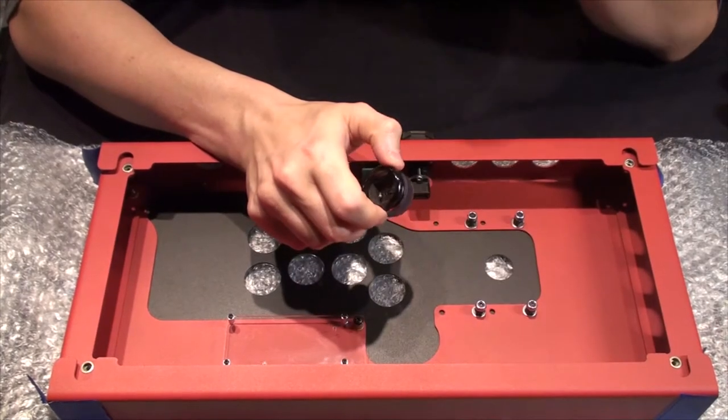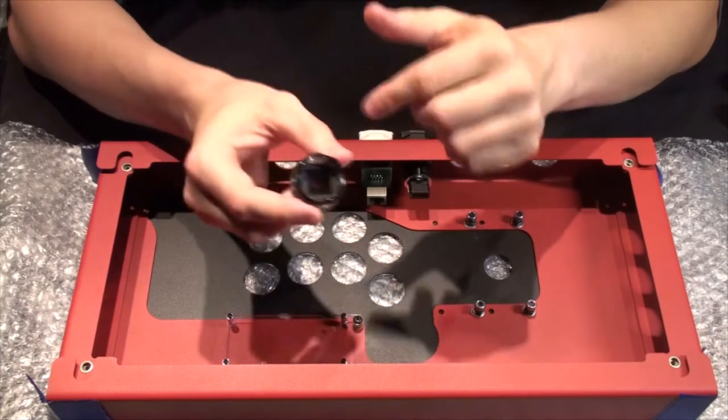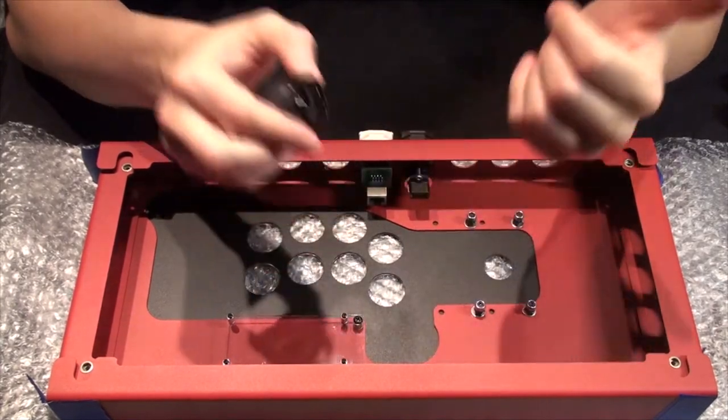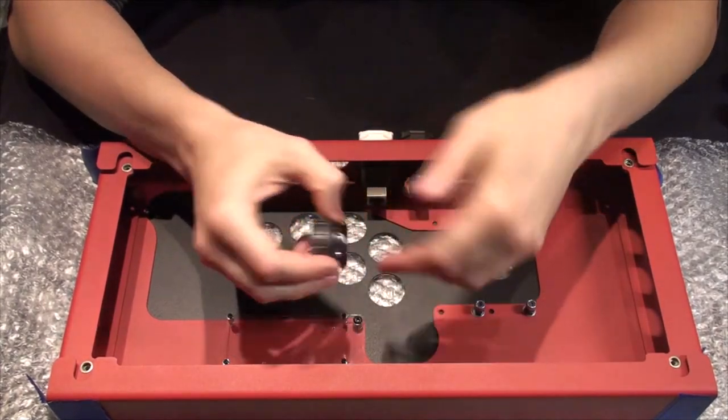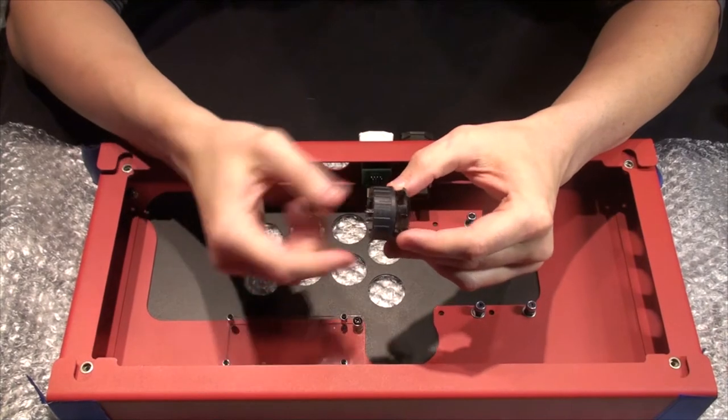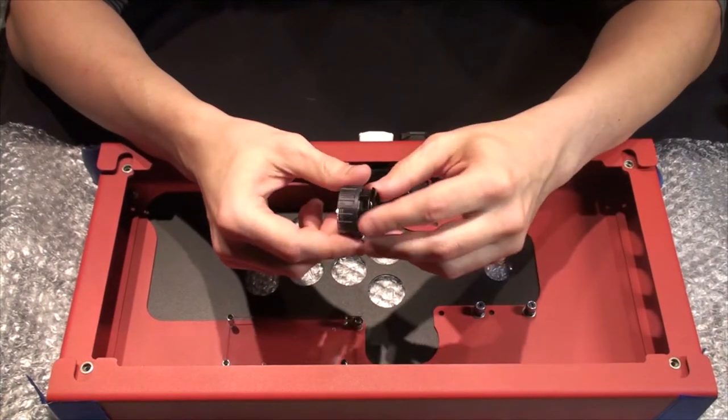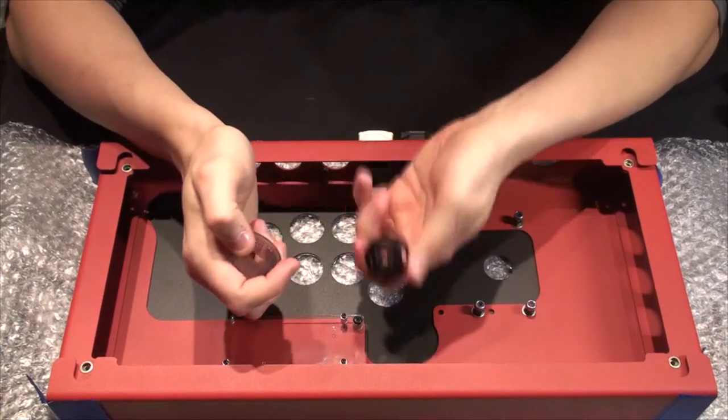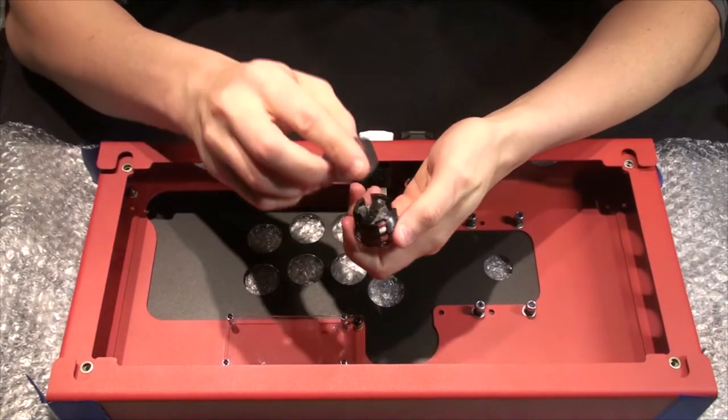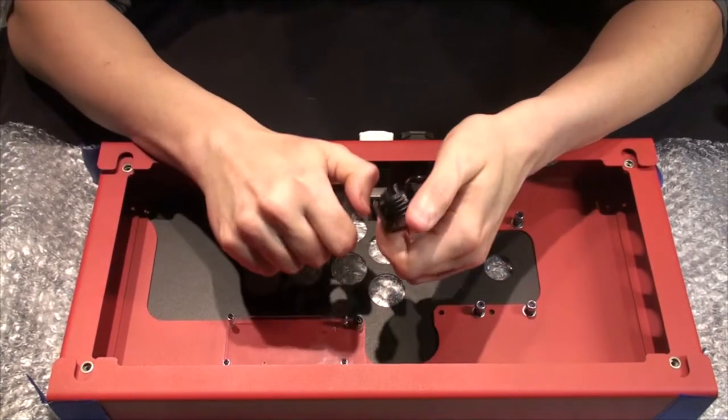In the case of Sanwa, Seimitsu, usually you'll have a plunger in, you'll have a switch in. It's pretty much just either you have a snap-in, which this is not, or you have a screw-in, which this is. So you'll just have a ring, you plug in the button from the base, secure it with the ring, and then you're good to go.